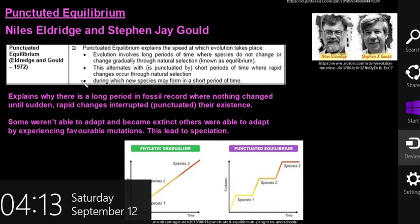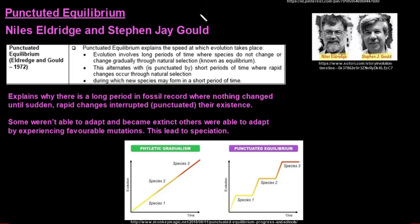Then looking at punctuated equilibrium. This was put forth by Niles Eldridge and Stephen Jay Gould. And this was done in 1972, so it's a fairly recent theory of evolution. So this explains the speed at which evolution takes place. Because there are long periods of time where species do not change or they change gradually through natural selection. So we call this equilibrium.